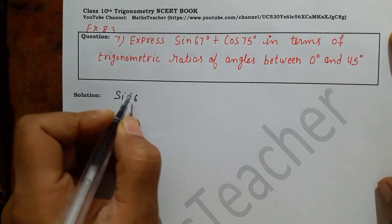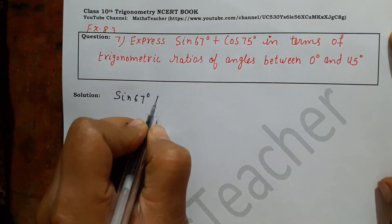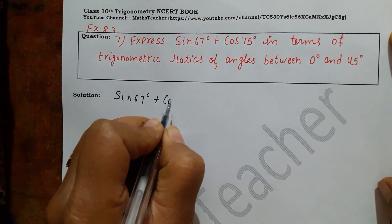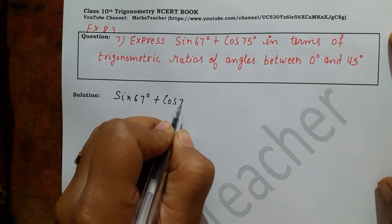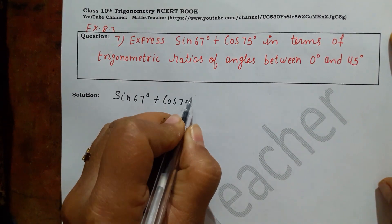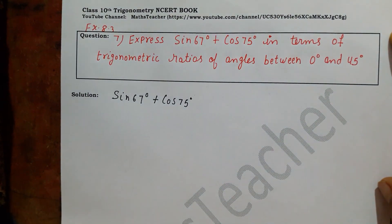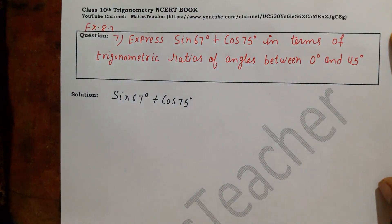The equation is sin 67° plus cos 75°. So how can we change this? We can change it with the help of trigonometric ratios.